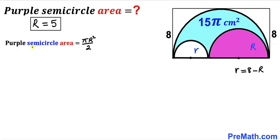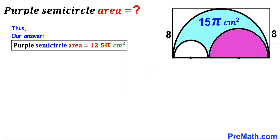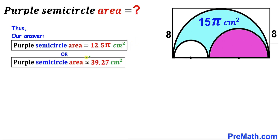Now let's calculate the area of the purple semicircle: πR²/2 = π × 5²/2 = 25π/2 = 12.5π cm². In decimal terms, the area is approximately 39.27 cm².